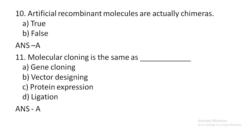Artificial recombinant molecules are actually chimeras. This is a true or false question. Option D: composite molecule. Molecular cloning is the same as a dash.